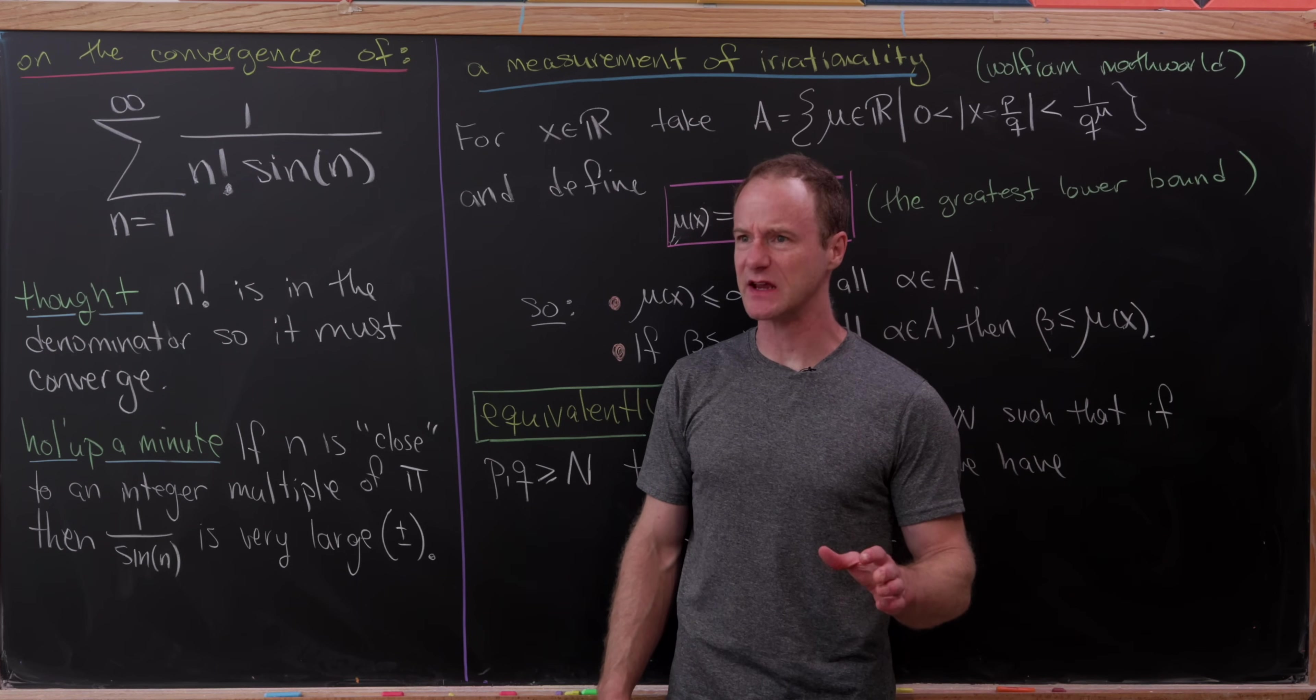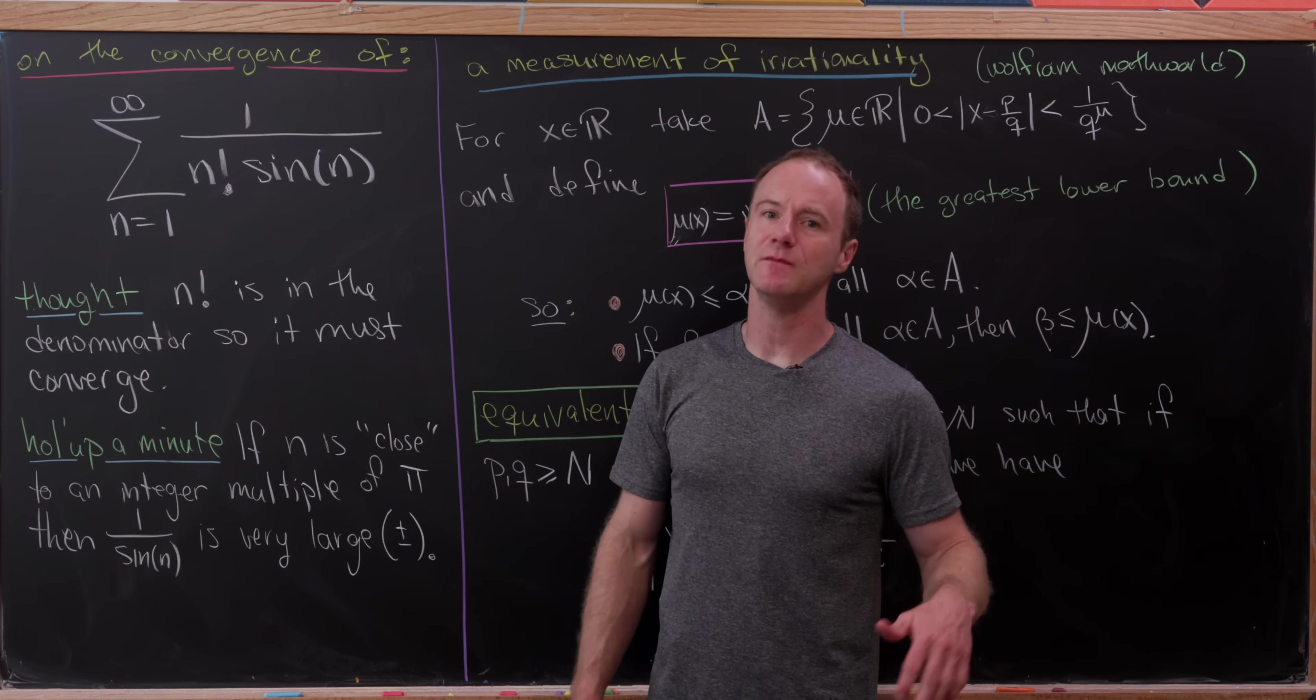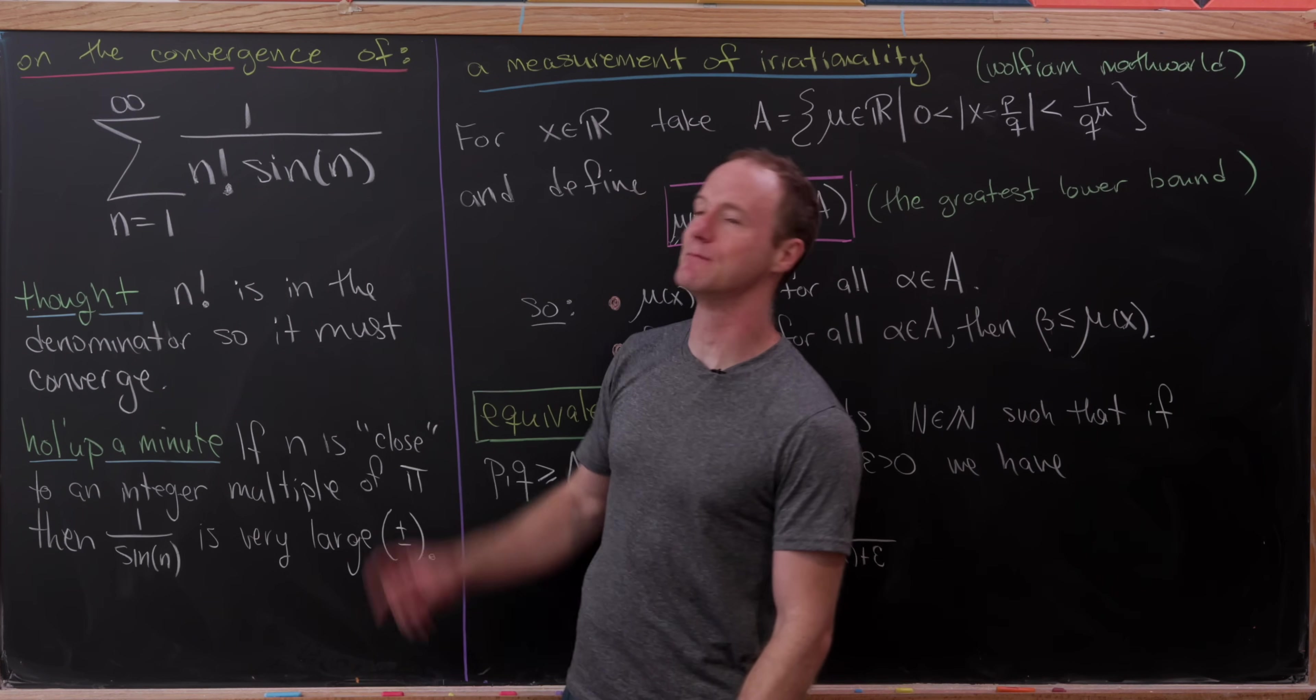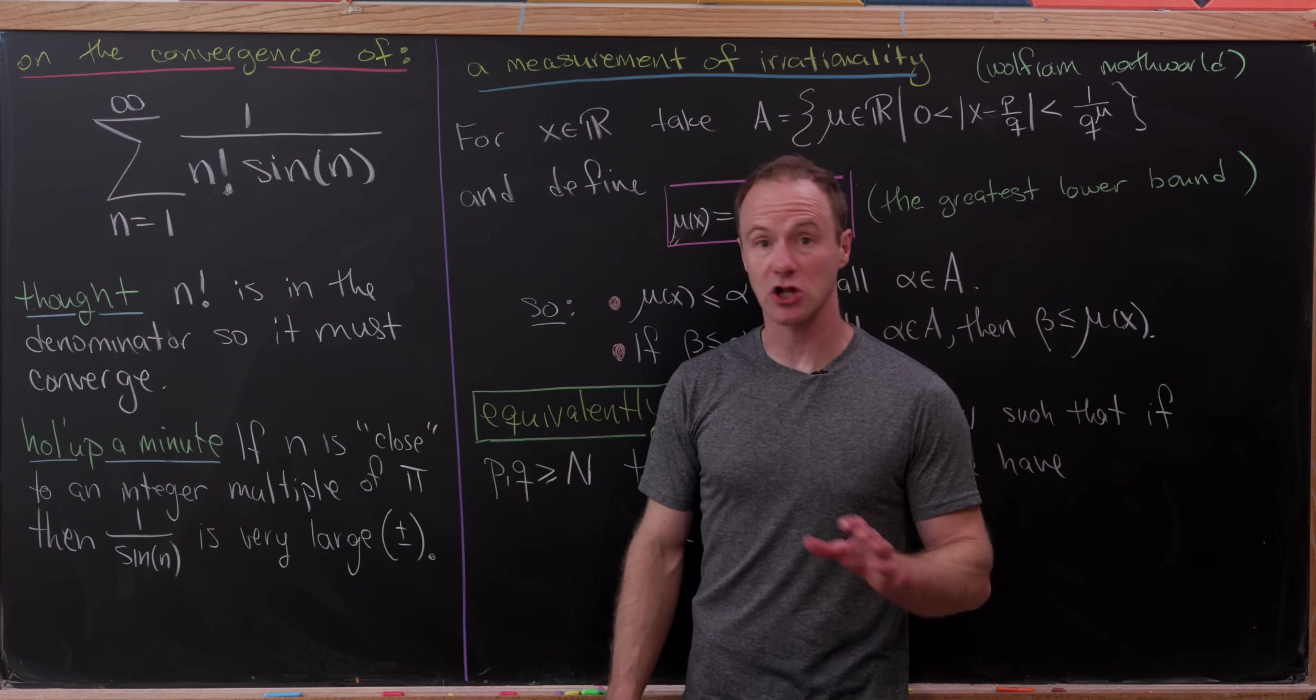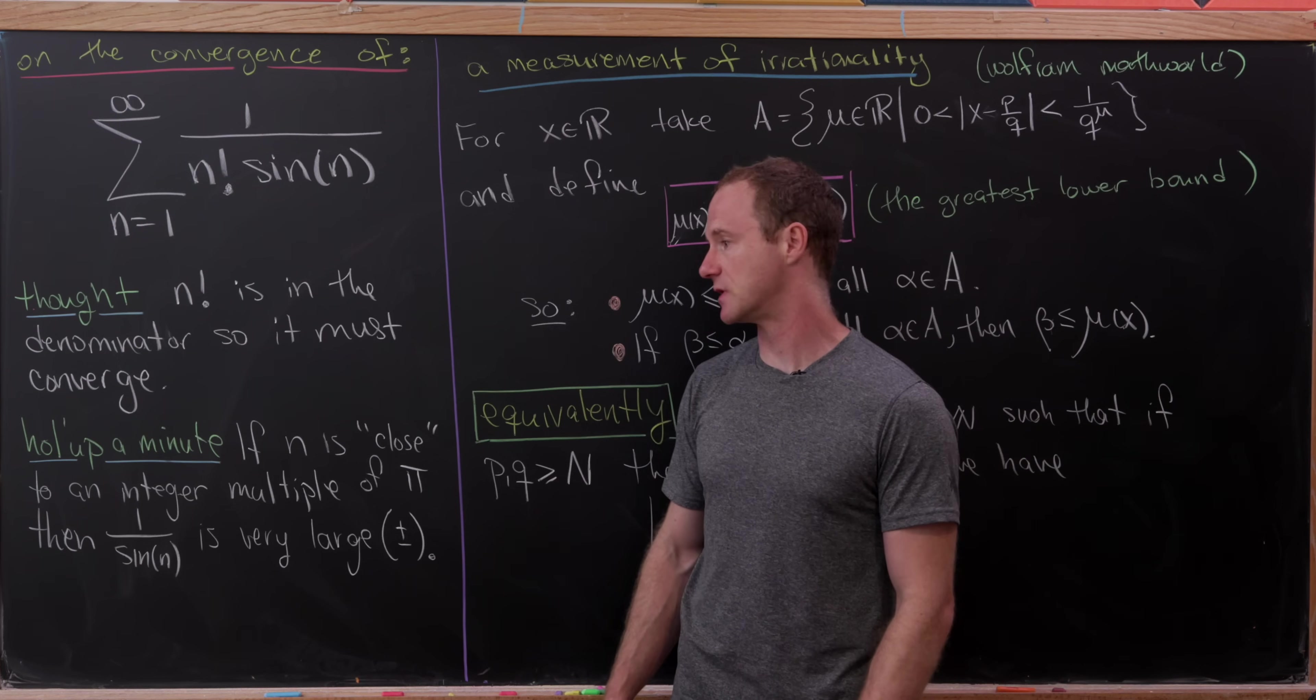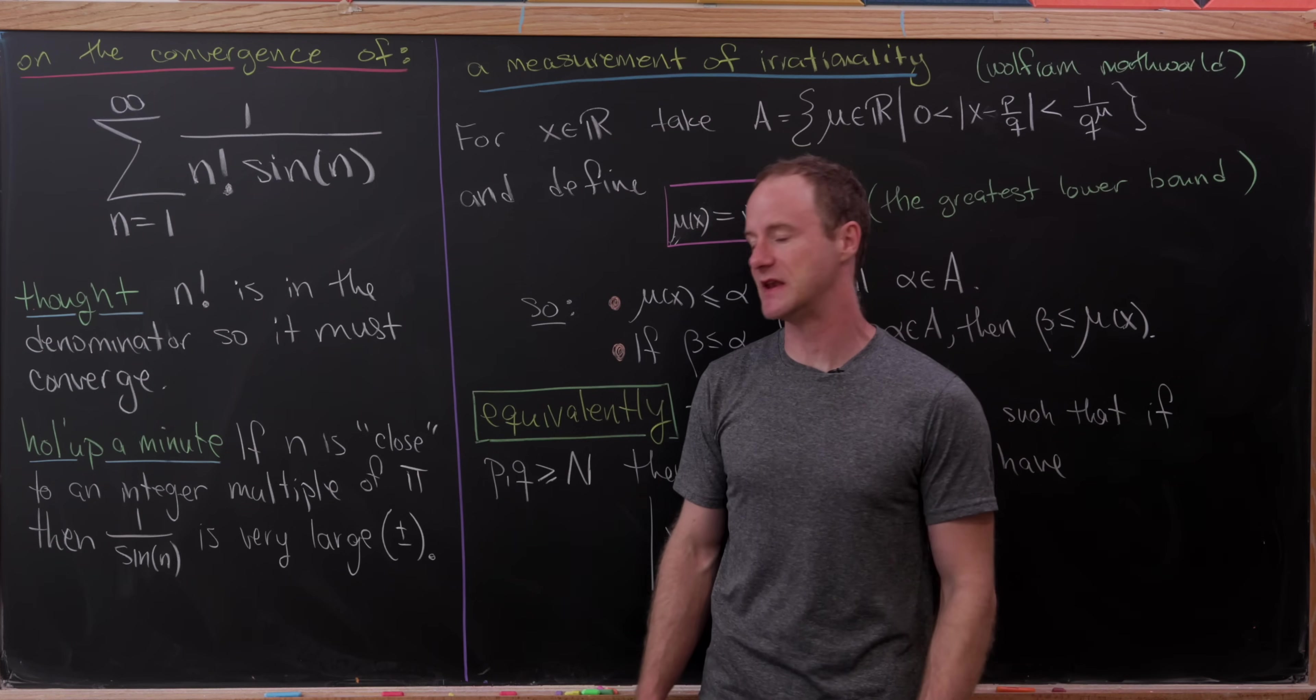Really two things are apparent in this series that are pulling it in two different directions, one towards convergence and one towards divergence. The immediate thought is that n factorial is in the denominator, and n factorial grows very quickly, so this must converge. But if n is close to an integer multiple of pi, then sine of n is pretty close to zero, and thus 1 over sine is very large, either positively or negatively large.